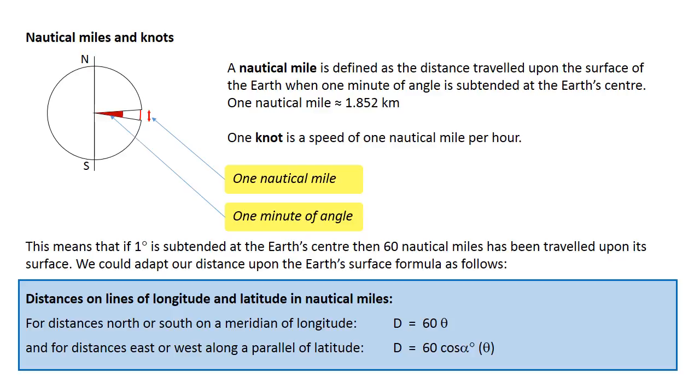We could adapt our distance upon the Earth's surface formula as follows. For distances north or south on a meridian of longitude, we could use the formula d equals 60 theta to give a distance in nautical miles. Or, for distances east-west along a parallel of latitude, d equals 60 cos alpha times theta.